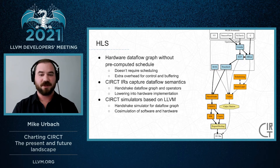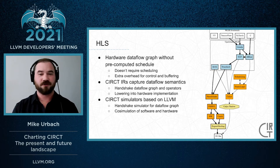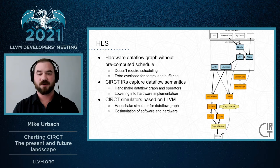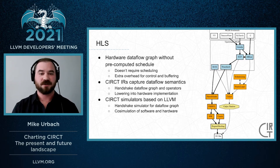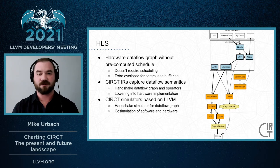The first path we have working is based on data flow and doesn't require scheduling. Circuit can lower a program from MLIR's control flow graph into the handshake IR, which represents a data flow graph. This can be simulated using LLVM's JIT compiler or lowered into hardware using Circuit's lower-level IRs. While this approach is very flexible, it introduces extra overhead in the hardware.